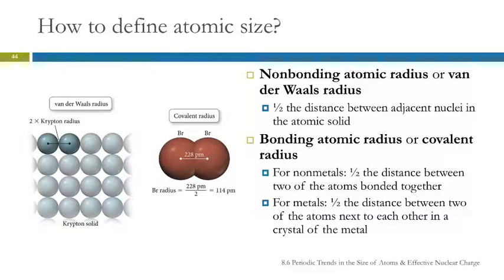We're going to look at some periodic trends. One of those is atomic size. Before we can look at the trend in atomic size, we have to address how do you define atomic size. Because we just learned that the electrons are essentially these standing waves in different fantastic shapes that overall add up to being roughly spherical. But how do you measure the edges of that?